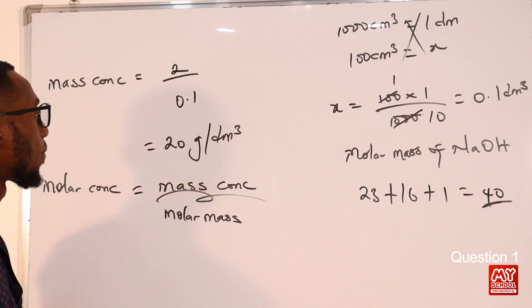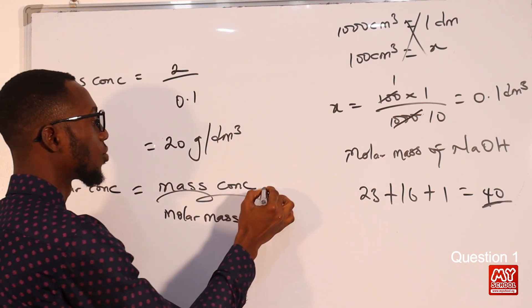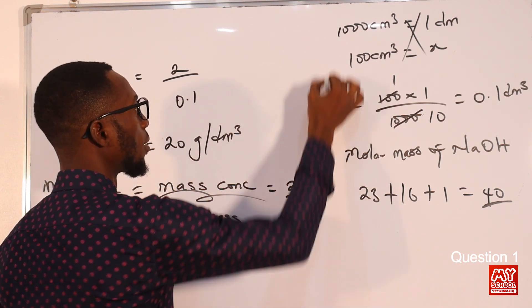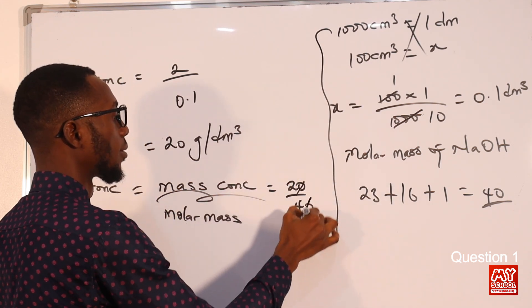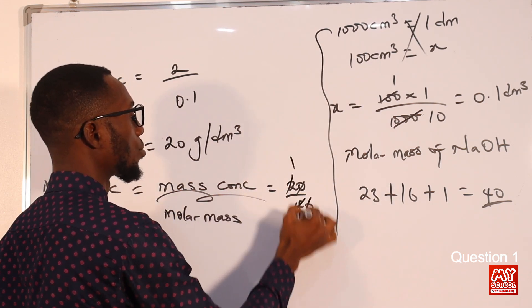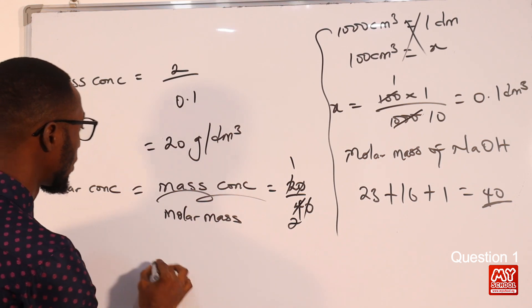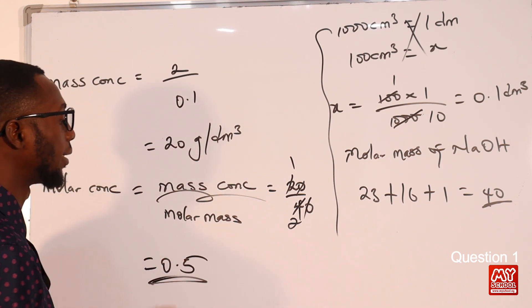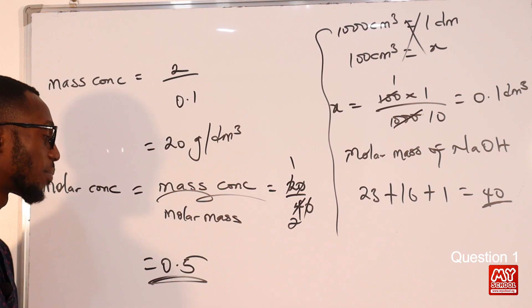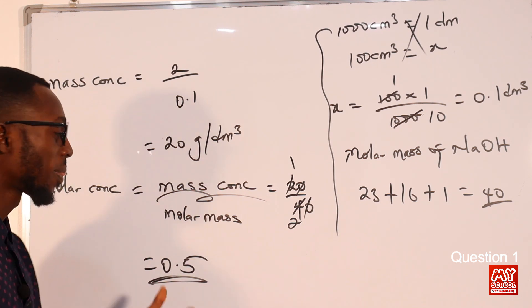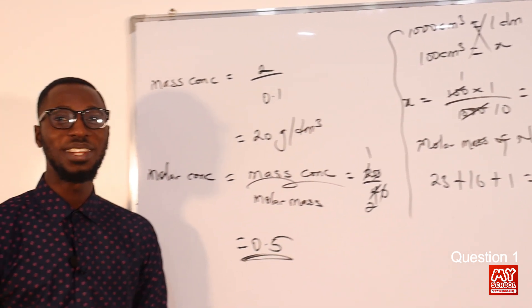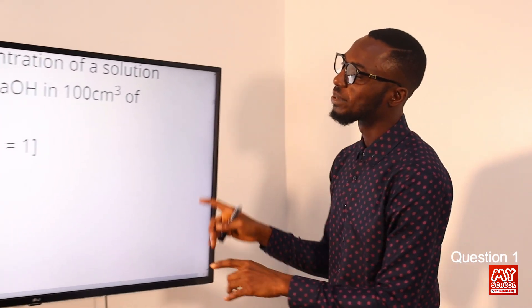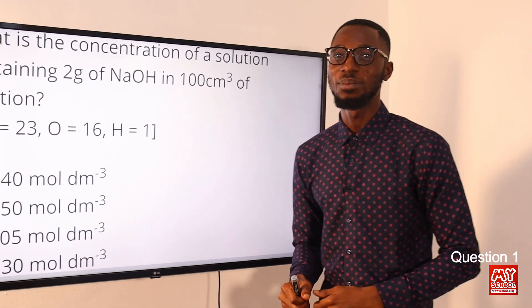The molar mass of NaOH is 40. The mass concentration is 20. So that is 20 over 40, which gives 0.5 mol/dm³. We say 0.5 or 0.50 mol/dm³. Looking at the options, we can find that in option B. So option B is the correct answer.